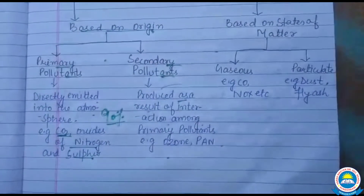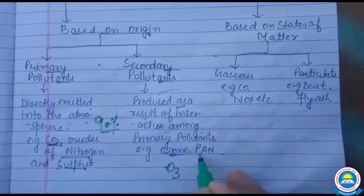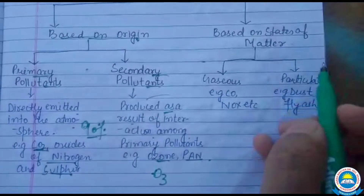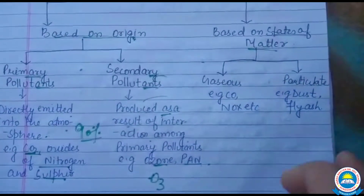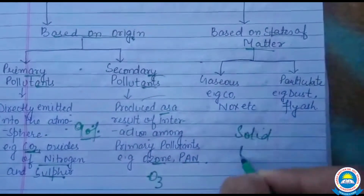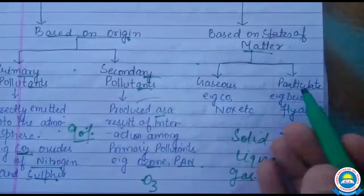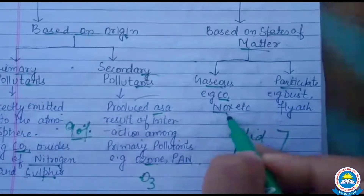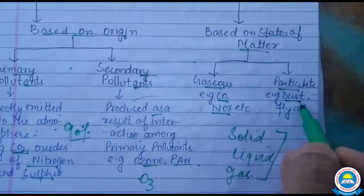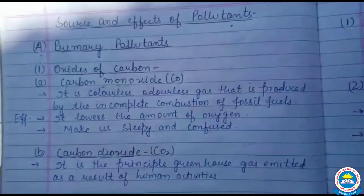Secondary pollutants जैसे कि ozone (O₃) और PAN। उसके बाद based on the states of matter — कौन से state में वो present है — हमारे पास तीन होते हैं: solid, liquid और gas। उसके हिसाब से दो categories हैं: gaseous (जिसमें carbon monoxide और NOx आते हैं) और particulate (जिसमें dust और fly ash आते हैं)।